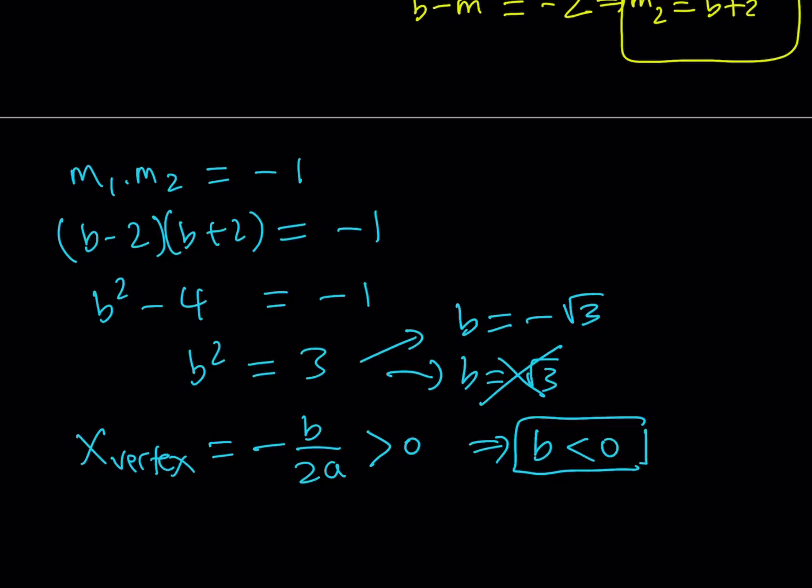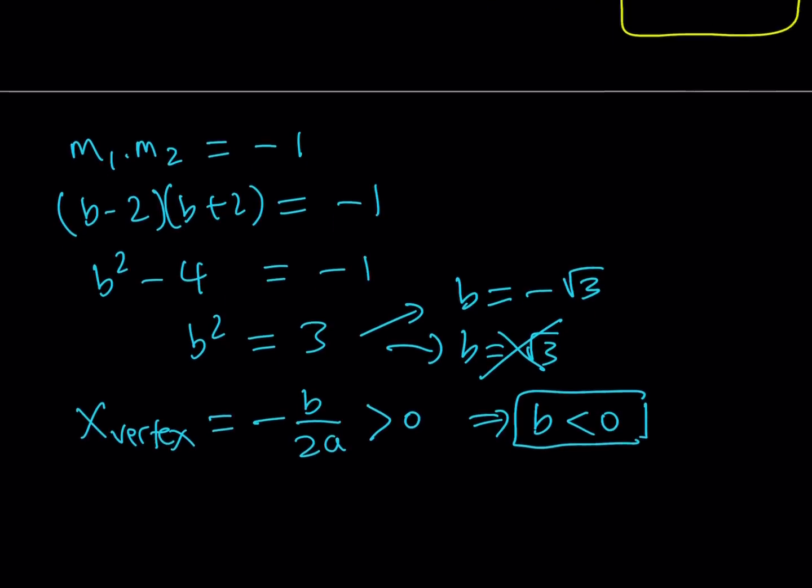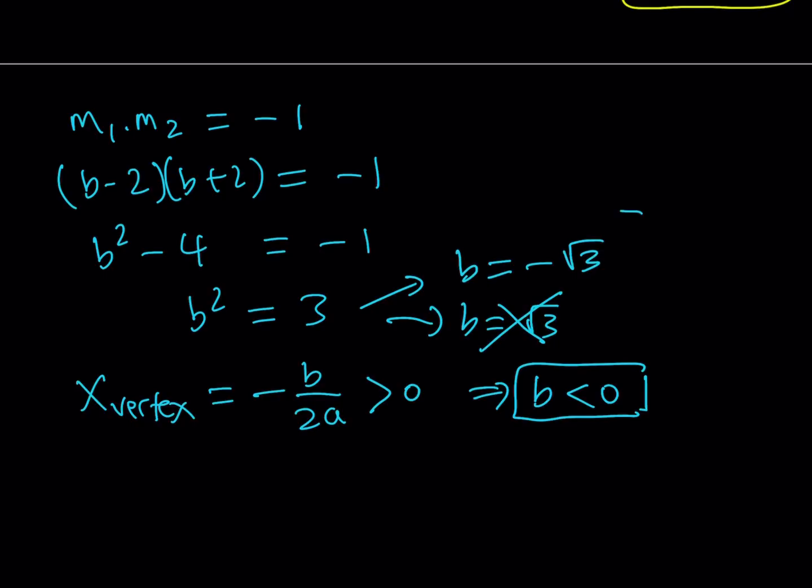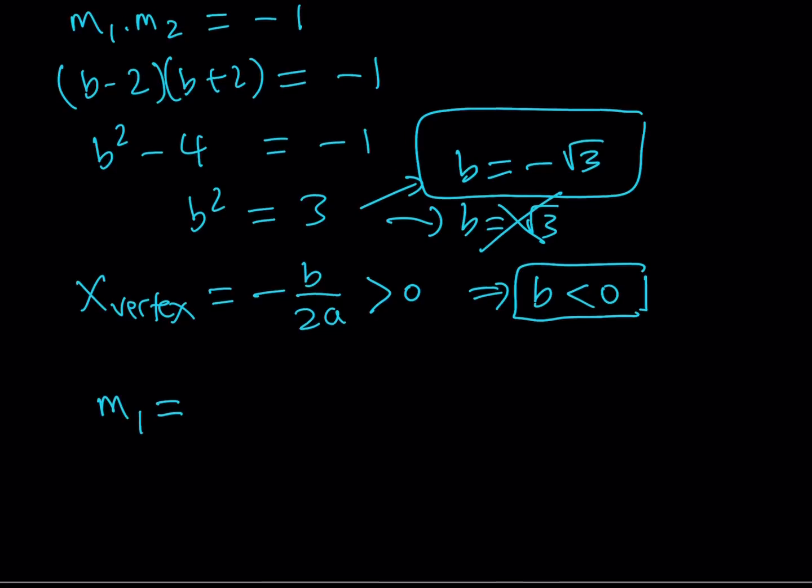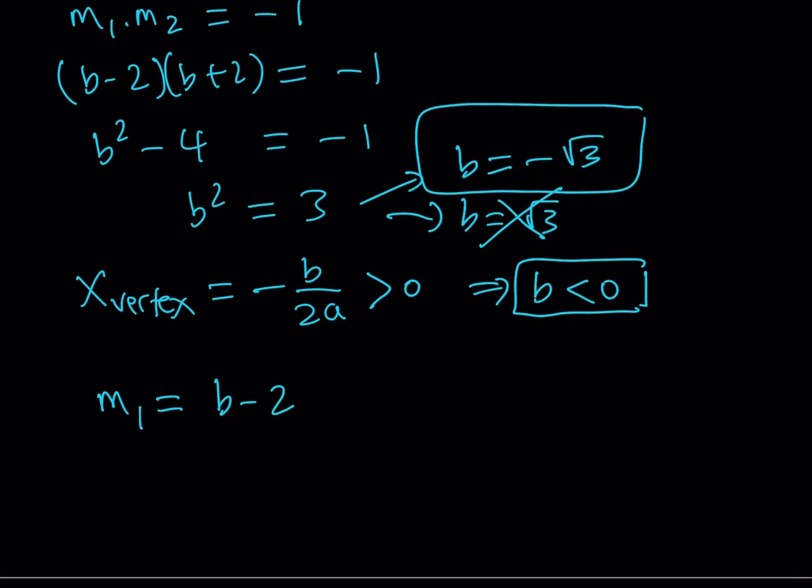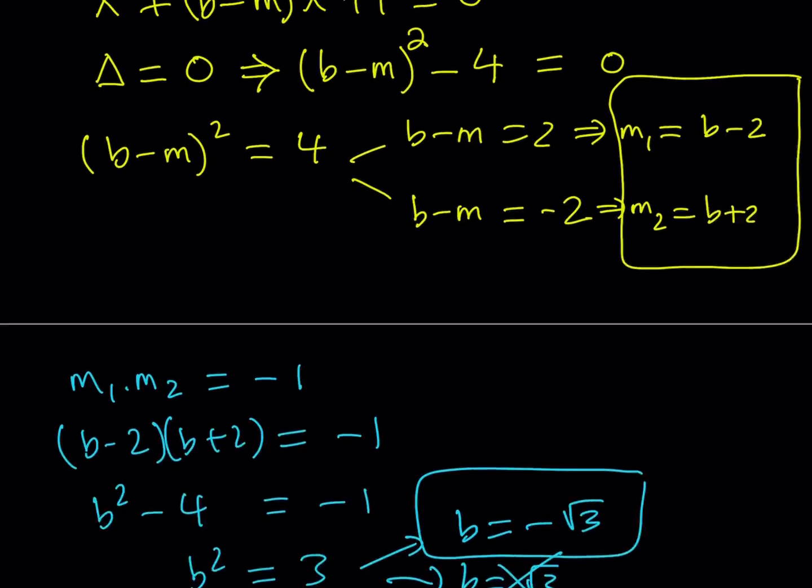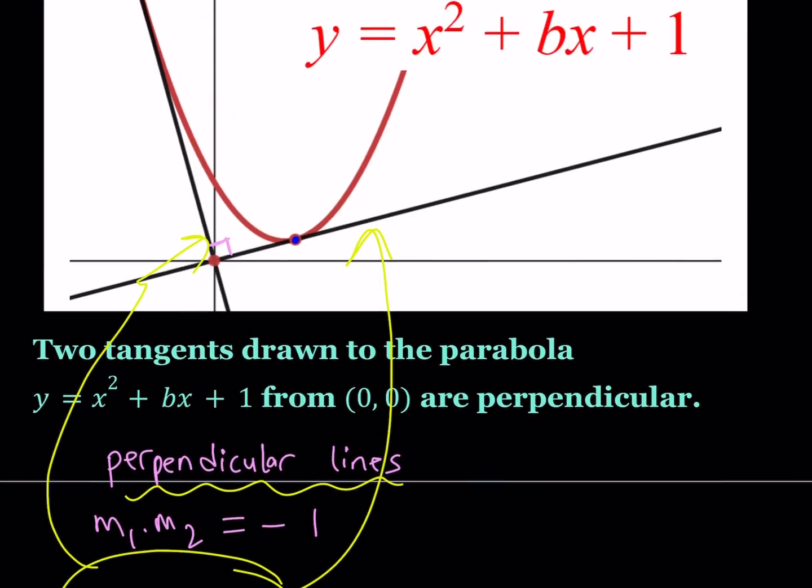What would happen if you use b equals root 3? You can kind of explore that, and let me know what you come up with. But we know that b is equal to negative root 3. That's kind of nice, because that gives me the b value, which is one of the things that I want to find. But I also want to find the equations of these lines, so let's go ahead and find the m values. And we know that there are two slopes, m1 is equal to, we just found it here, b minus 2. And since b is equal to negative root 3 minus 2, we get negative root 3 minus 2 here for the m1. And m2 is equal to b plus 2, and that should equal negative root 3 plus 2. And notice that m1 is negative, m2 is positive, because one of the lines have a positive slope, and the other line has a negative slope, as you can clearly see in the picture.